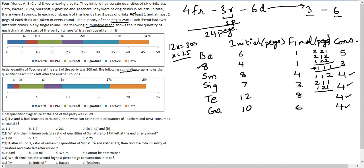Let's look at the individual question. If A and D had Teachers in round 2, one of the three setups applies to Teachers. If two units were consumed in round 2, the distribution has to be 1-2-1. Then what is the ratio of quantities of Teachers to 8PM consumed in round 3? Since 8PM is always consumed in 1-1-1 fashion, and Teachers has 1 consumed in round 3, the ratio is 1 to 1. That is the answer.